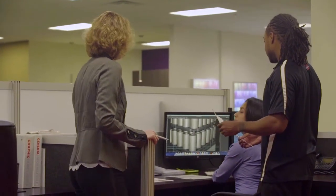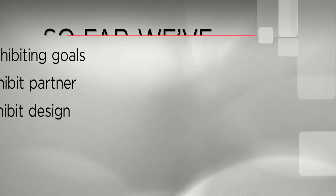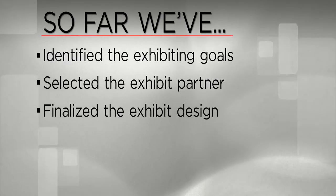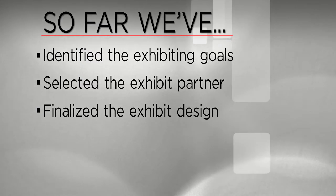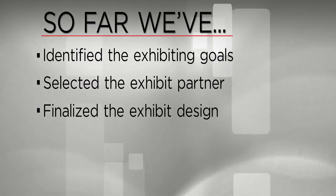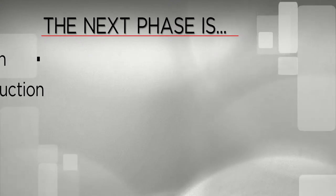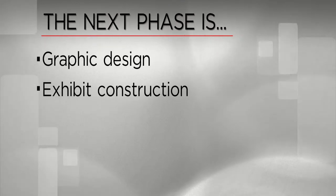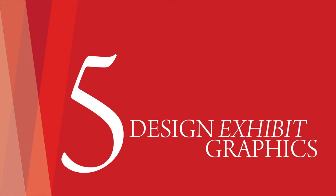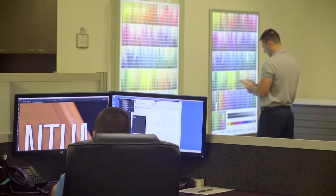So far we've covered the need to identify exhibiting goals, select the exhibit partner, and finalize the exhibit design. The exhibit partner has started the process of planning for the exhibit build. The next phase is the graphic design and overall construction of the exhibit. Step five: once the team finalizes the exhibit's manufacturing blueprint and plan, guidelines and graphic templates for the design of the display will be provided.